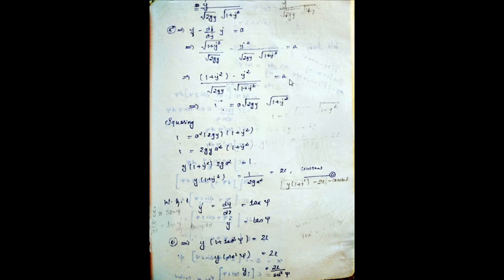After cross-multiplying and squaring, we get y times (1 + y_dot squared) equals 1 divided by 2g a squared. Taking this as a constant c, and since y_dot equals dy/dx equals tan(ψ) where ψ is the slope angle, substituting gives y into (1 + tan squared ψ) equals 2c, so y times sec squared ψ equals 2c, giving y equals 2c divided by sec squared ψ, which equals 2c cos squared ψ.